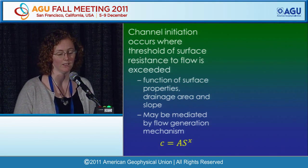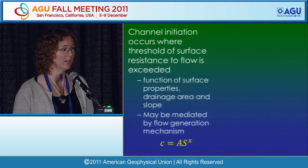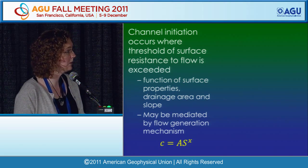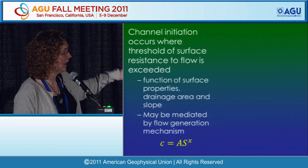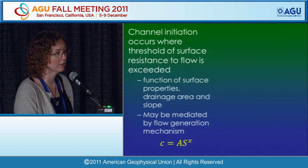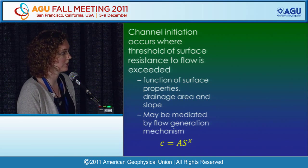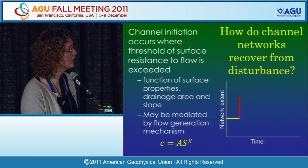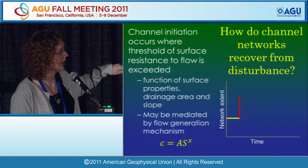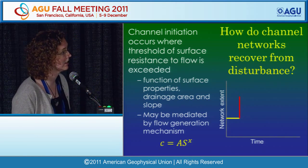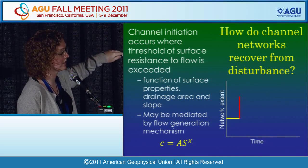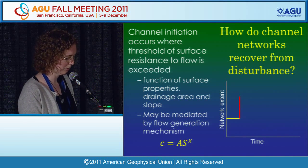Channel initiation is also mediated by flow generation mechanism — saturation overland flow, infiltration overland flow, or subsurface storm flow. A simplified threshold relationship of the form: threshold constant equals area times slope to a power, captures this, where the exponent x is typically around two in forested and relatively undisturbed watersheds. The key question is: how do channel networks recover from disturbance where there may be changes to both the threshold constant and the exponent? This can be framed in terms of network extent versus time: if disturbance — in this case, human agriculture — comes along and changes the channel network, does it recover immediately, reach a new steady state and then recover, or are changes permanent?